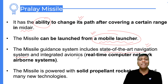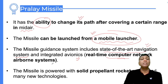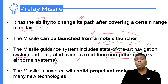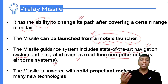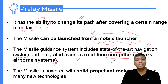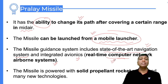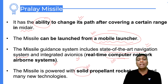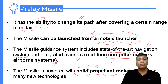The Pralay missile also features an integrated avionic system — a real-time computer network airborne system. Every moment, it detects what is happening in the air through its own sensors and integrated avionic systems. One more important point: this missile is propelled by solid propellants. Solid-stage propellants are used to propel the Pralay missile.